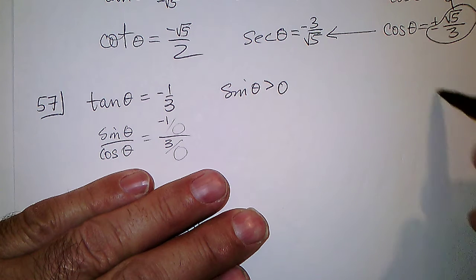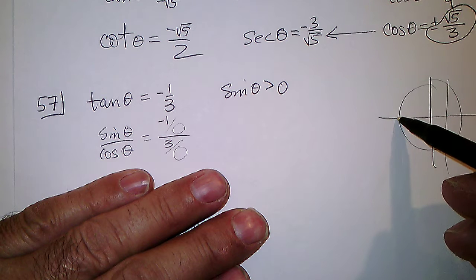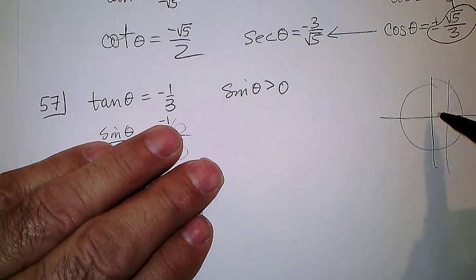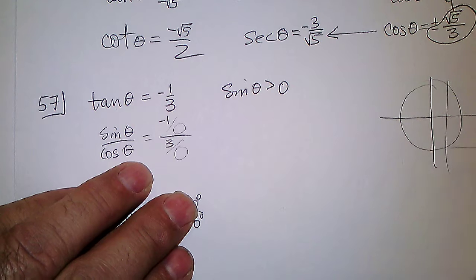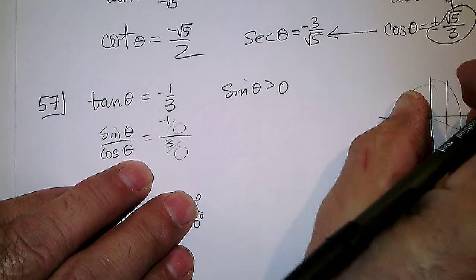And just like we were doing before, if we were at minus 1 in the sine and 3 in the cosine, we wouldn't be on the circle, we'd be too far out, so we have to pull it back.